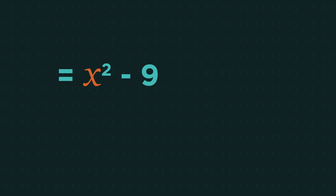One key thing to note is that we can only factorize like this when it's an x squared minus a square number. It must be a minus, not a plus.